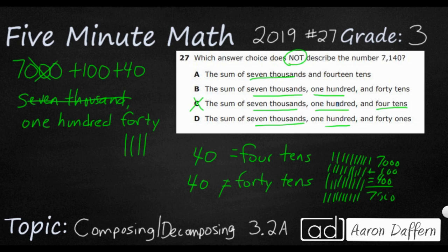Let's check answer choice D: 40 ones. If I count 40 by ones, I'm going to get up to 40. So yes, 40 ones does equal the number 40. That one is correct.